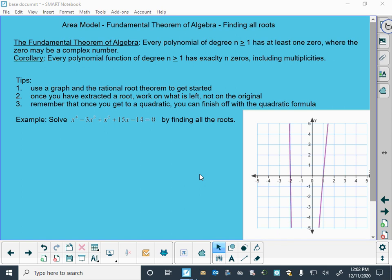So my tips on identifying all of these roots are: number one, use a graph. Use the rational root theorem to get started. We didn't specifically talk about the rational root theorem either, but we can tell from this graph because this hits at negative 2 and positive 1, we would expect that x plus 2 is going to be a factor and that x minus 1 is going to be a factor.